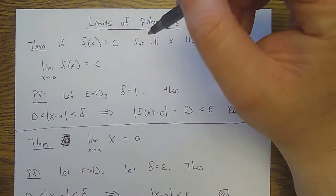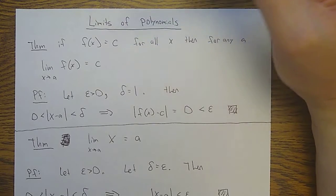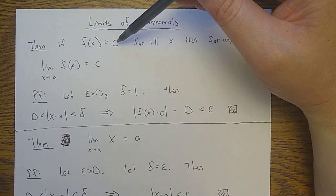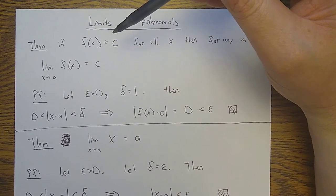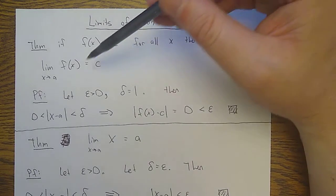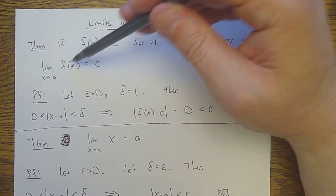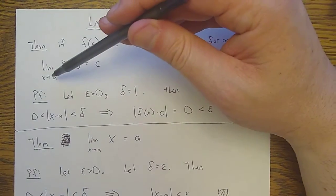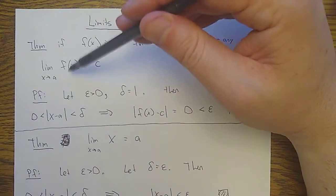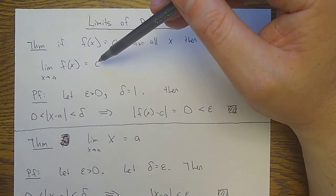So assume we have such a function. I'm going to claim something obvious, but in this class we prove a lot of things that are considered obvious because this is proofs. If we have a constant function, then the limit as x goes to a of that constant function is just c. This is like saying the limit as x goes to a of one is one — whatever the value of that constant is.